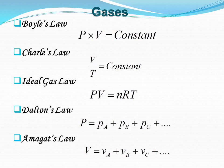Next is Amagat's law. It states that the total volume occupied by a gaseous mixture is equal to the sum of the pure component volumes. That is, V = V_A + V_B + V_C, where the pure component volume is the volume that would be occupied by a component gas if it were present at the same pressure and temperature as the mixture.